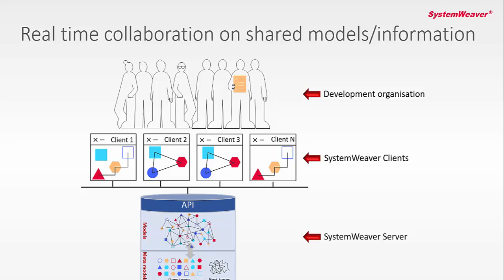The way SystemWeaver is technically set up, as you see in this slide, at the bottom we have what we call the metamodel, where you set up the information artifacts — the item types — that you want to work with. These could be requirements, test cases, functions, software components, physical components, interfaces, and so on. The other important part of the metamodel is what we call the part types, or relations, that you use to tie together or relate different information artifacts to each other. When you have set up the metamodel, you can define models based on the rules defined in your metamodel.